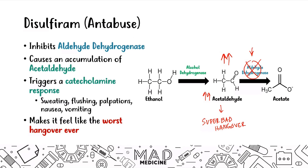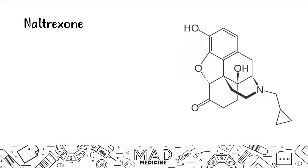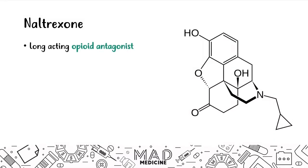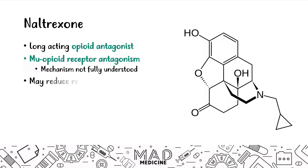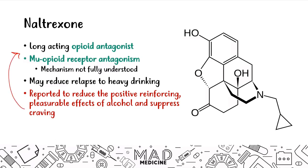The second drug is naltrexone, which is a long-acting opioid antagonist — mainly a mu-receptor antagonist. The mechanism is not fully understood, but it may help reduce relapse to heavy drinking. It's reported to reduce the positive reinforcing, pleasurable effects of alcohol and to suppress cravings by acting as a receptor antagonist.